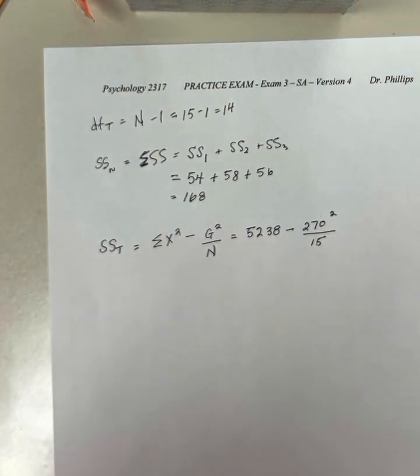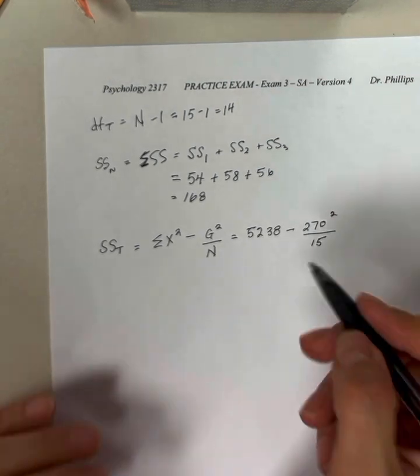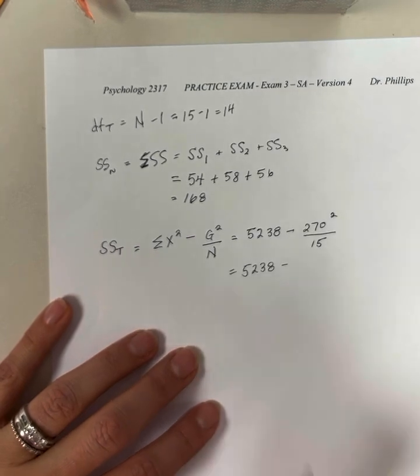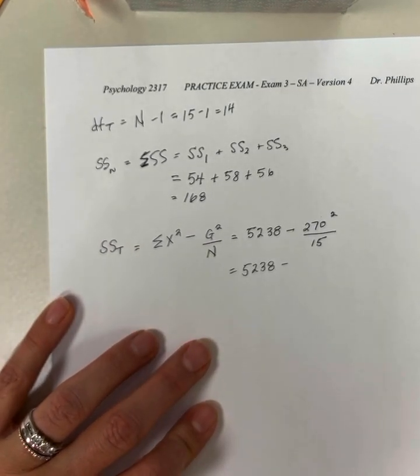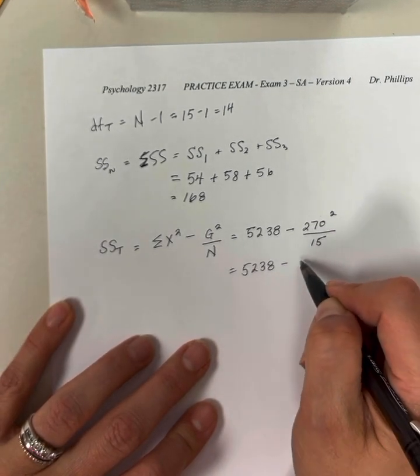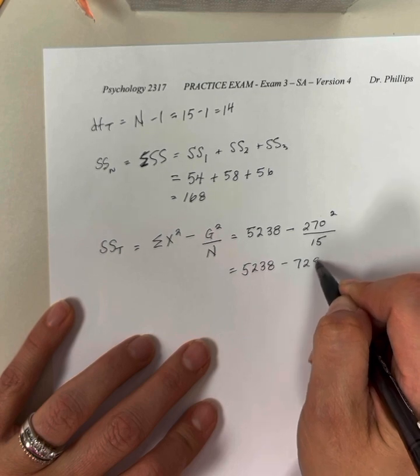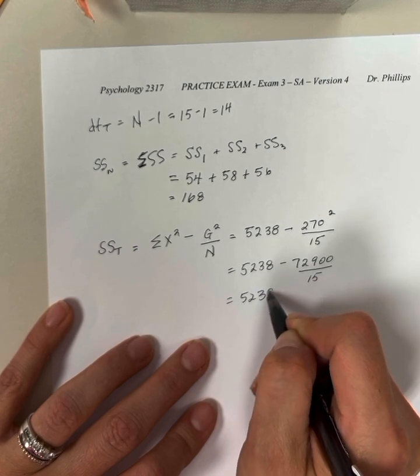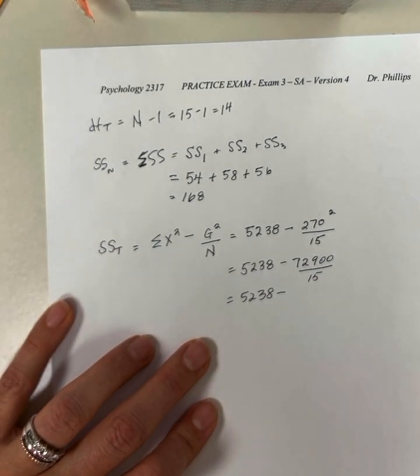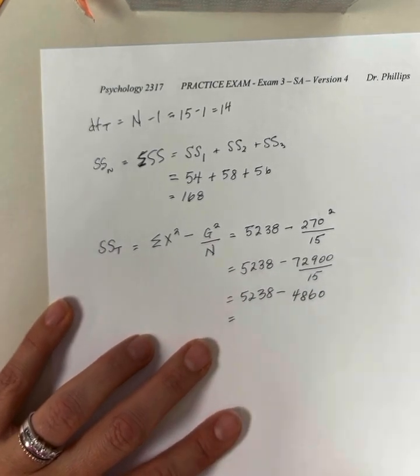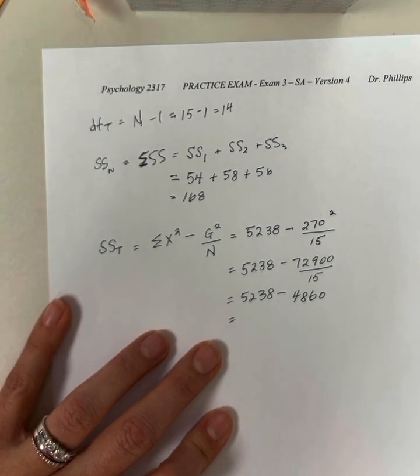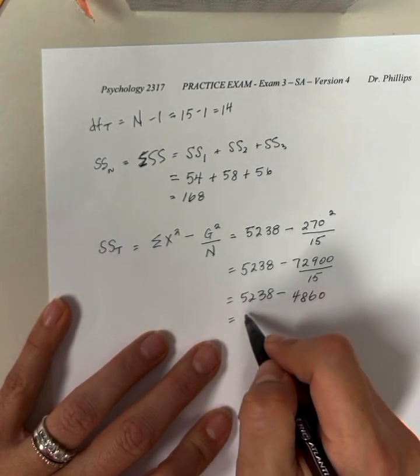This is the sum of squares. Just like any other sum of squares, it's going to have to be positive. If you get a negative number, you know you've done something wrong. So that's a signal to you. So 270 squared is 72,900 divided by 15, which is 4,860. So 5,238 subtract 4,860 is 378.